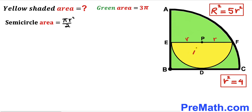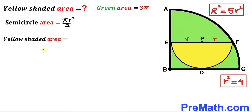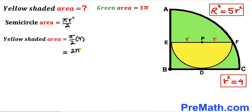Here's our final step. Now we calculate the area of the yellow shaded semicircle. The semicircle area = π·r²/2. Substituting r² = 4, the yellow shaded semicircle area = π/2 × 4 = 2π square units.